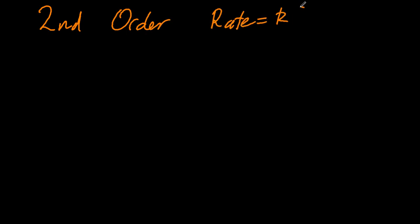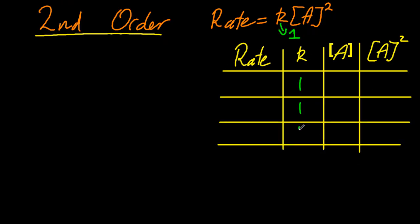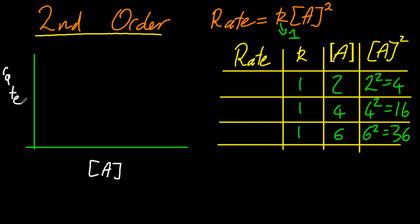And let's look at second order. So rate is K concentration of A squared. Let's kick off with the same table. Again, the rate constant, it's constant. I'll choose 1. That's easy. And so A squared is 4, 16, and 36. Same graph, rate against the concentration of A. And this should give me a typical second order graph by plotting those three points.